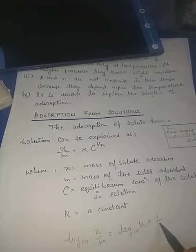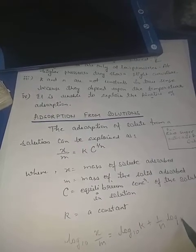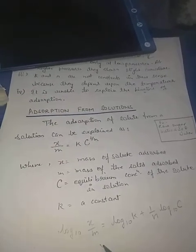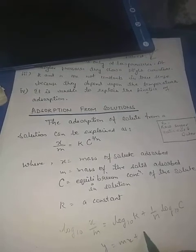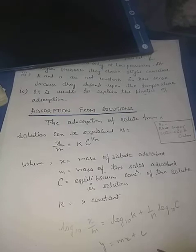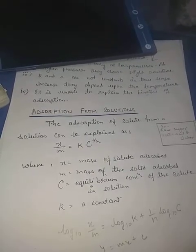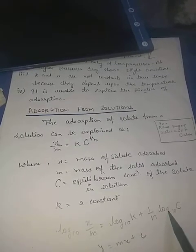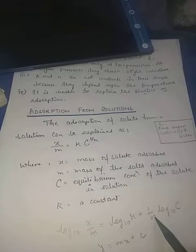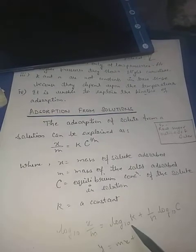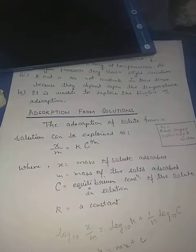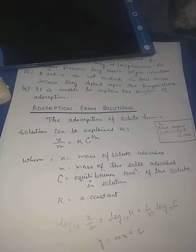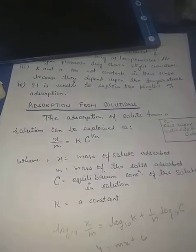This equation is of the type Y = mX + c, and it will represent a straight line when the graph is plotted between log(X/M) and log(C). Here, 1/N is the slope and log(K) is the intercept. Tomorrow we will study the Langmuir adsorption isotherm, where we will study the kinetic study of the adsorption process. Thank you.